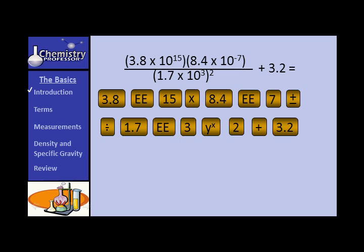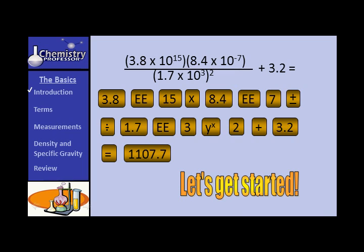Then add 3.2. This follows the order of operations — My Dear Aunt Sally: multiply, divide, add, and subtract. That should equal, when you round it off, approximately 1107.7. We will get significant digits straight when we get to that section. Well, enough on calculators — let's get started.